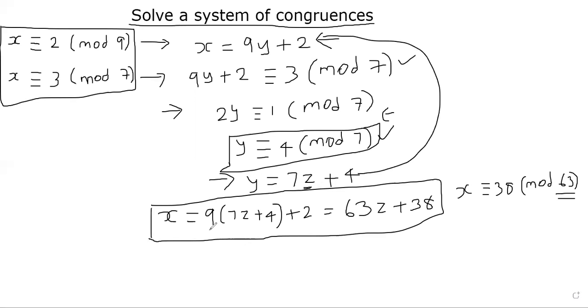And we can see here, our x is just dependent on z. There's no y here, of course, and 38. By definition of congruence, this means x is congruent to 38 mod 63. We get a solution, not only one solution, but a system of solutions, or a list of solutions.